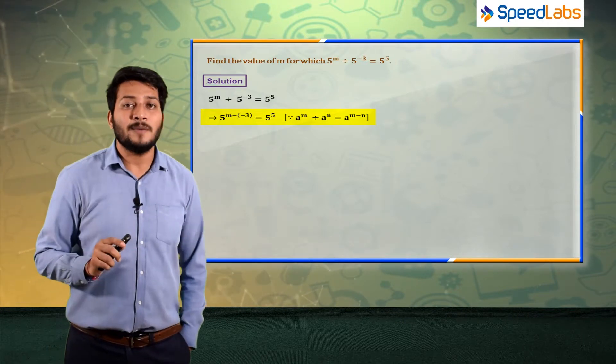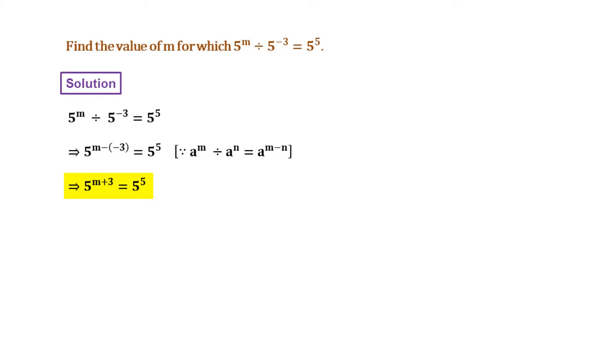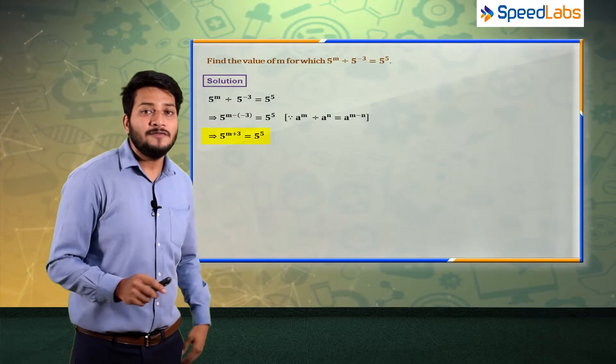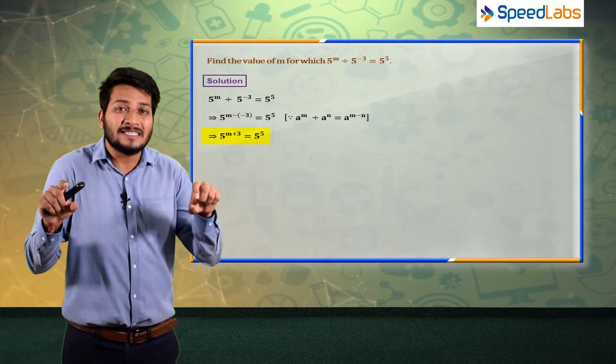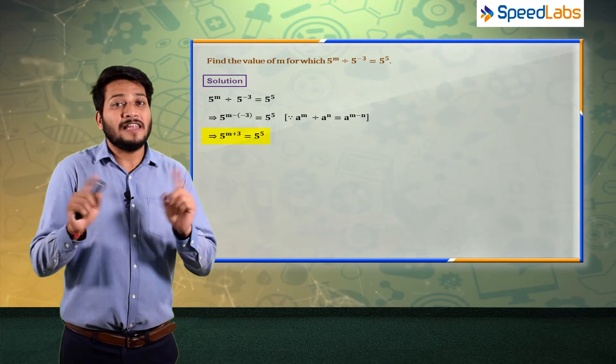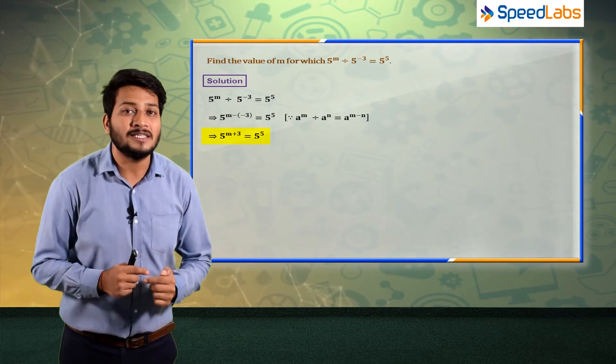And this is what I can say: 5 raised to the power m minus minus 3 is equal to 5 raised to the power 5. So if you simplify it, 5 raised to the power m plus 3 is equal to 5 raised to the power 5. So here on the left hand side and the right hand side the base is the same. And if the base is the same, then the power is the same.